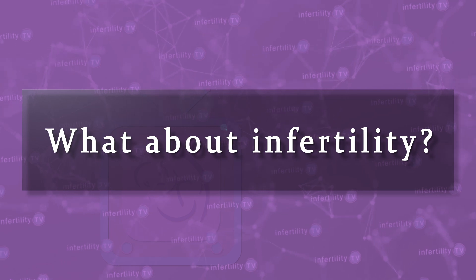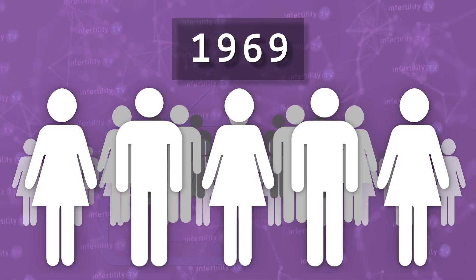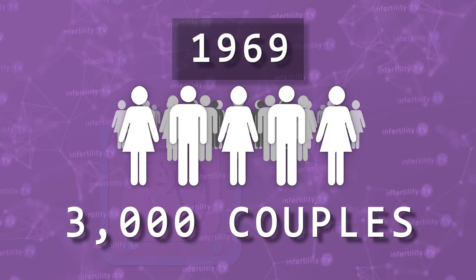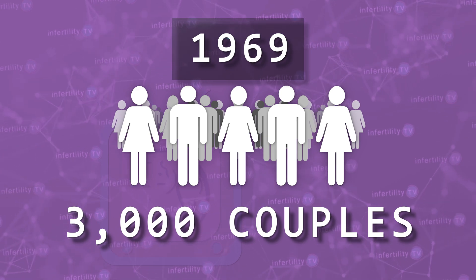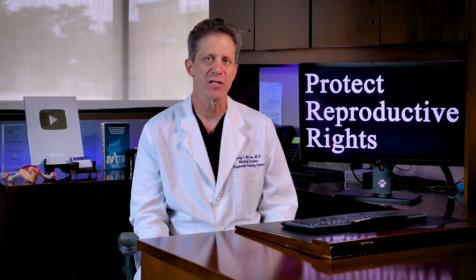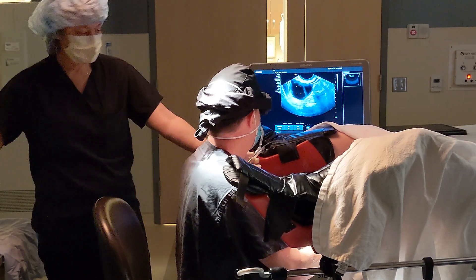What about infertility? A study of over 3,000 couples with infertility was published in 1969. They looked at the ABO blood types of both partners. They did not find that any particular blood type was more or less likely to be found in couples with infertility. They also did not find that ABO incompatibility between the partners led to a higher chance for infertility or early pregnancy loss.